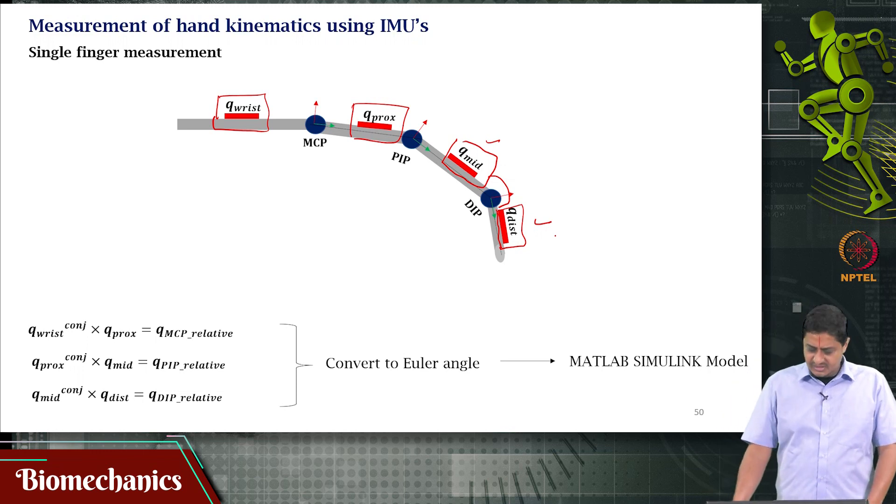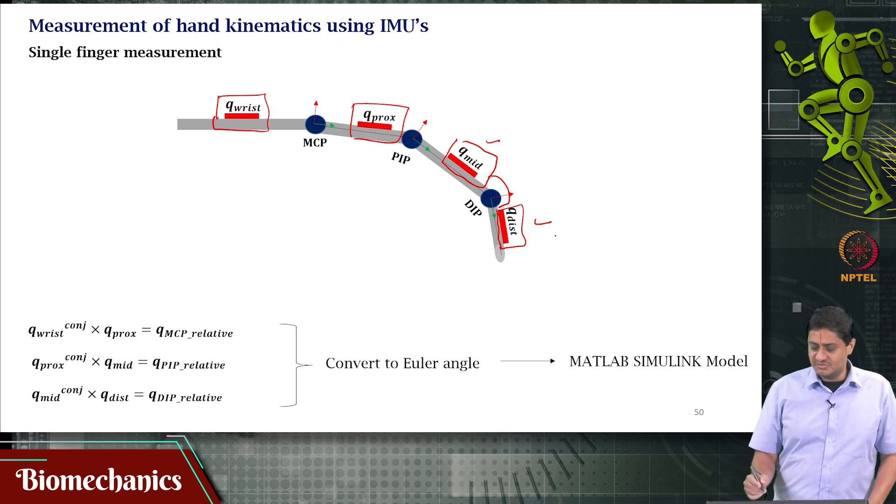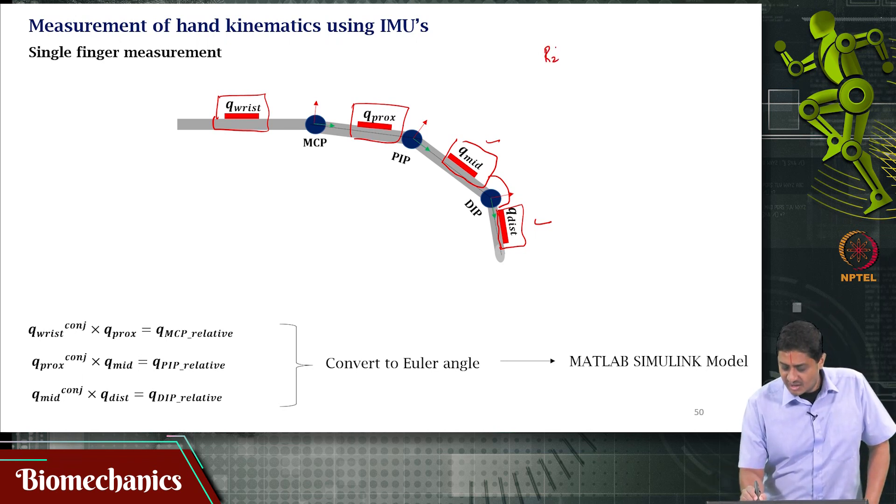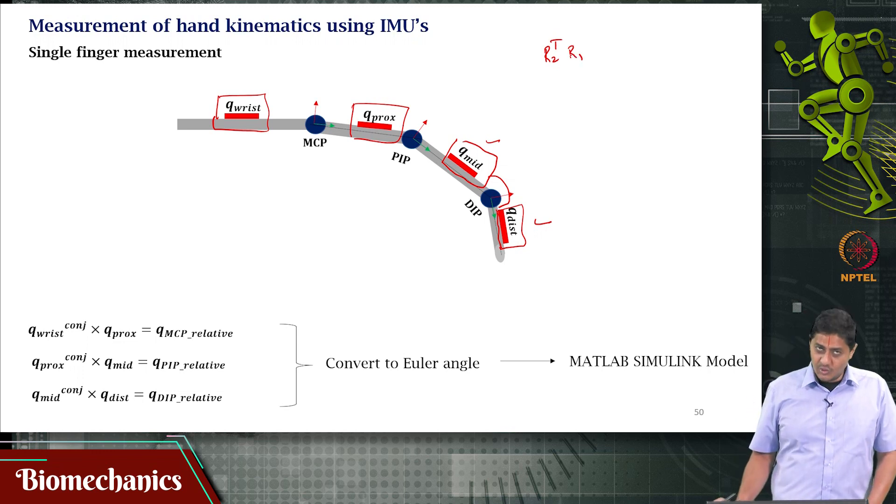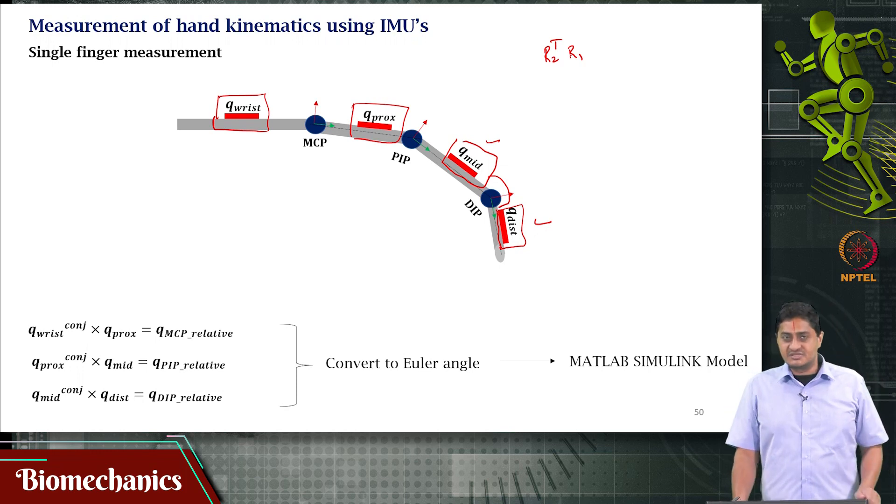You find the relative orientation using quaternions. Remember we discussed how to find relative orientation using quaternions? If I use rotation matrices, that would be R2 transpose times R1. If you don't remember, pause this video, go back to the rotation matrix video where this was described, watch it one more time. That's how you do it in rotation matrices.